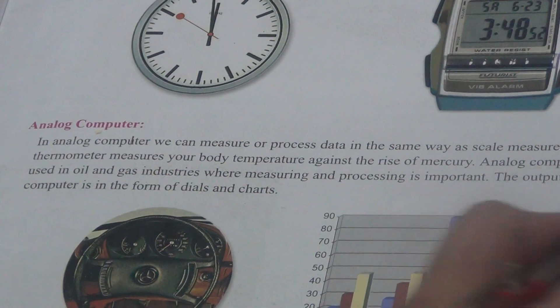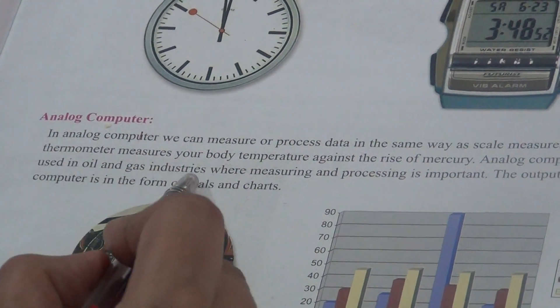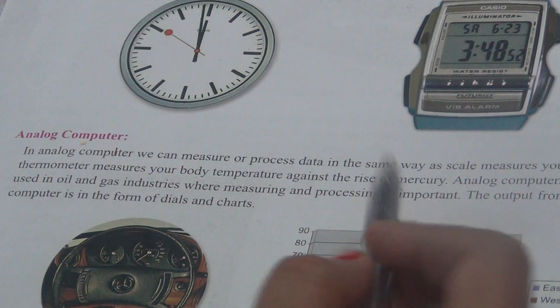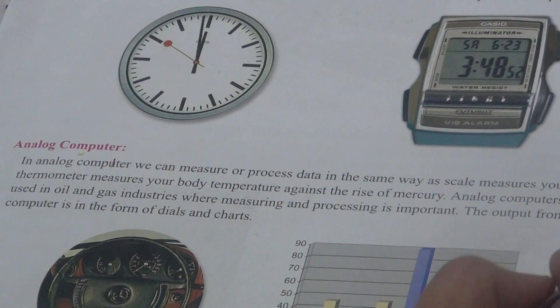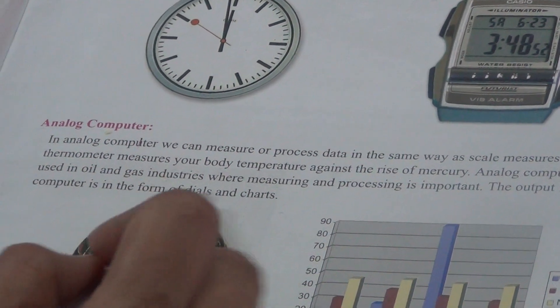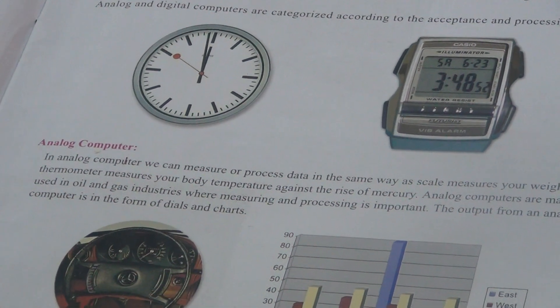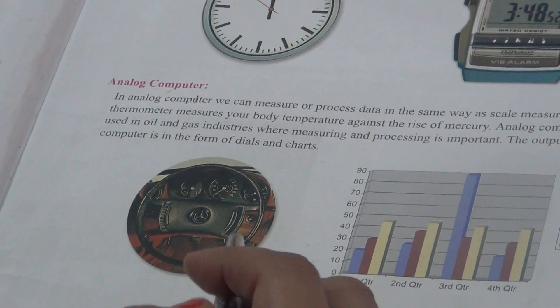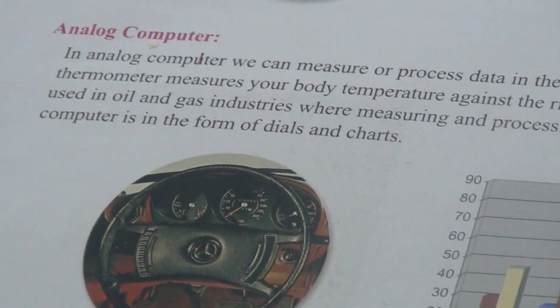Analog computers are mainly used in the oil and gas industry, yahan measuring aur processing bahut important hoti hai. The output from an Analog computer is in the form of dials and charts. Analog computers can measure physical quantities like speed, temperature, pressure, etc.